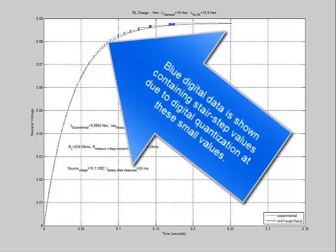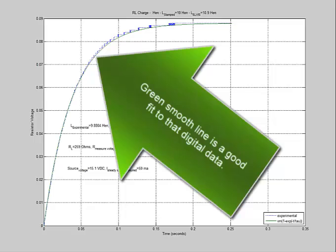The blue digital data is shown containing stair-step values due to digital quantization at these small values, and the green smooth line is a good fit to that digital data.